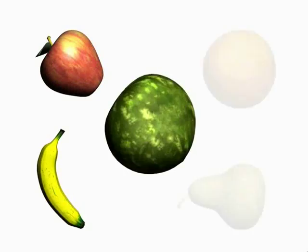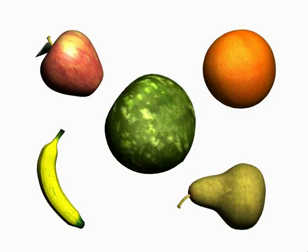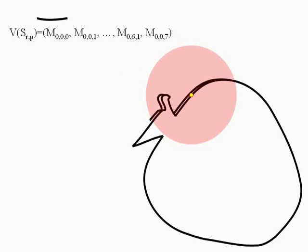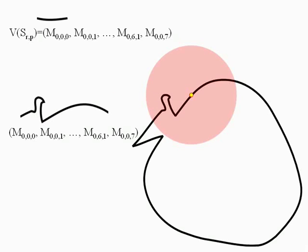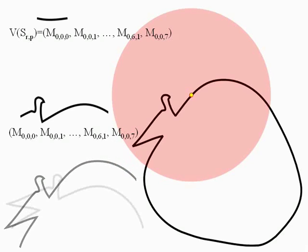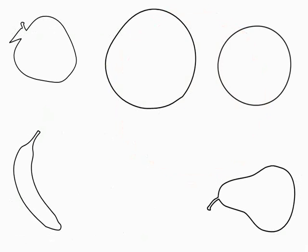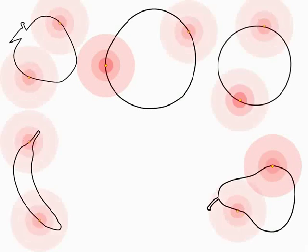We pre-process the given database of 3D shapes to allow fast partial matching queries during the collage construction. For simplicity, we will illustrate the process with 2D shapes. We represent each database element with local shape descriptors based on geometric moments. We compute the local descriptors for various parts of the shapes by intersecting them with solid spheres of increasing radius. In this manner, we process the entire surface of all the elements and store the computed descriptors in a nearest neighbor search data structure.